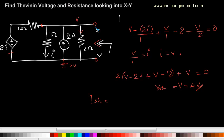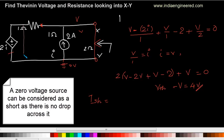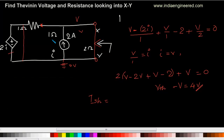First we will short-circuit these two terminals. Once we short-circuit, the 2-ohm resistance won't be in the picture. This resistance will also not be in the picture, since when it is short-circuited the current flowing through it will be zero — that means I will be zero. And this dependent voltage source can be considered as a short circuit. Now we just have a 2-ampere current source with a short right across it, so no current flows through the branch and all the current flows through the short circuit. That means the short-circuit current is 2 amperes.